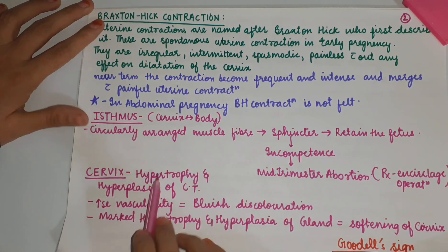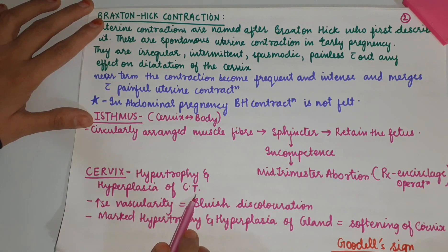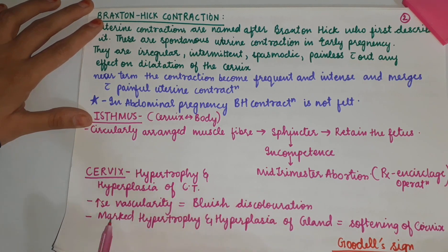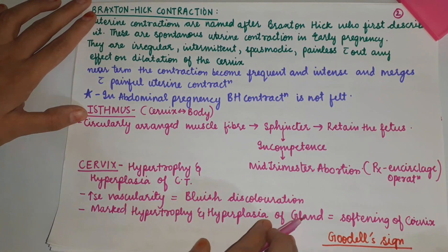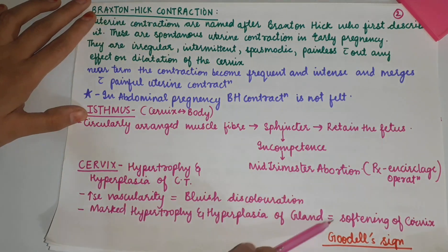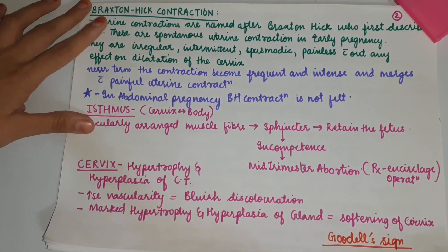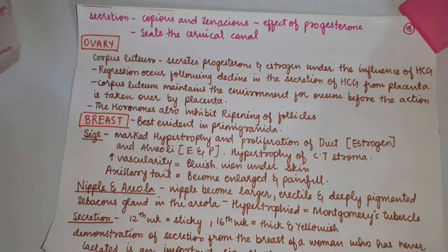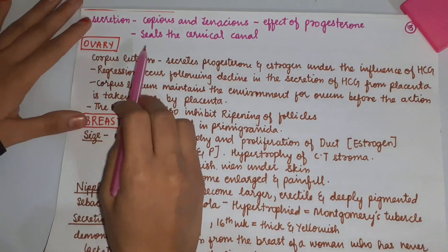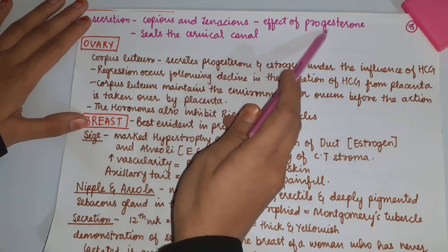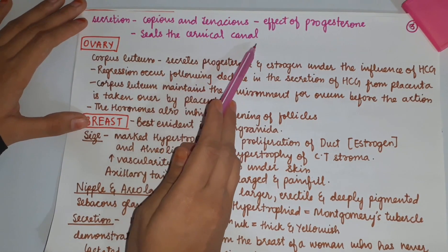Changes in the cervix: there occurs hypertrophy and hyperplasia of the connective tissue. There occurs increased vascularity that gives bluish discoloration. There occurs marked hypertrophy and hyperplasia of the glands, which leads to softening of the cervix. This is called Goodell's sign. Secretions in the cervix become copious and tenacious under the influence of progesterone, which seals the cervical canal.